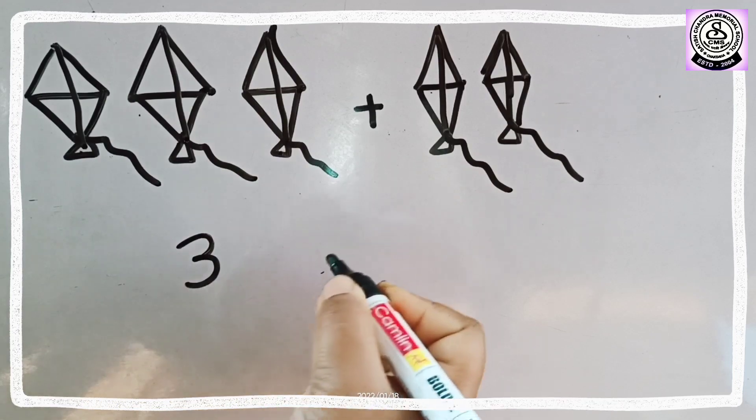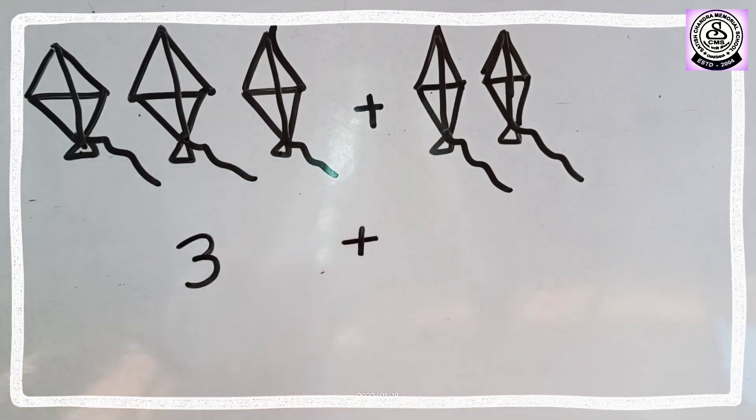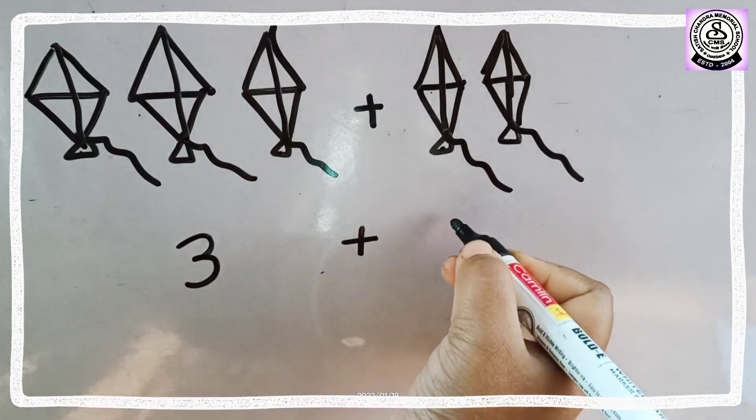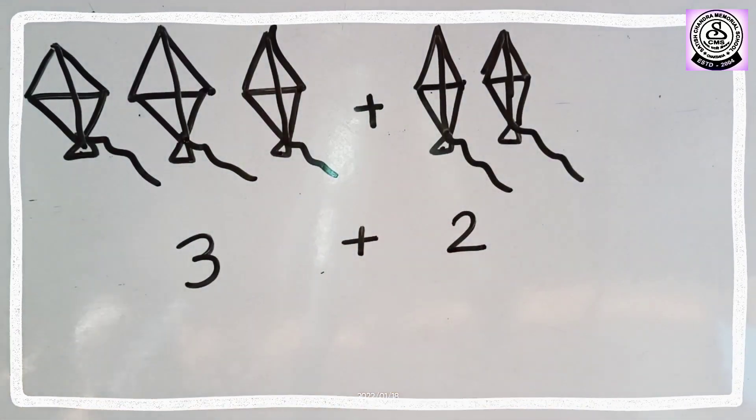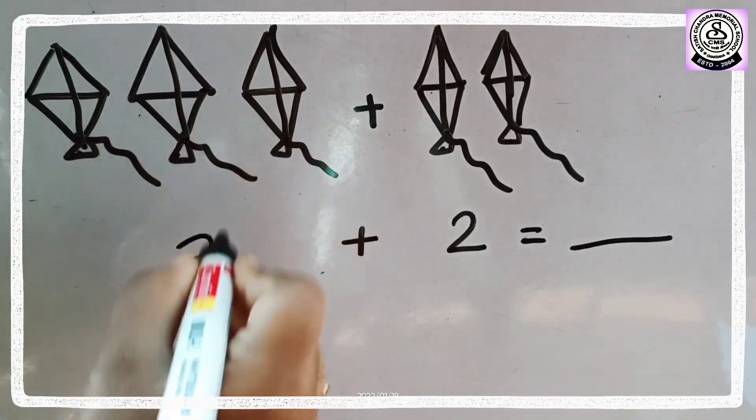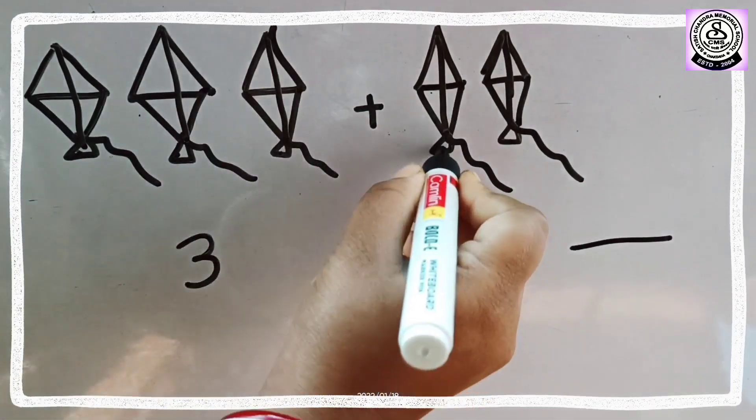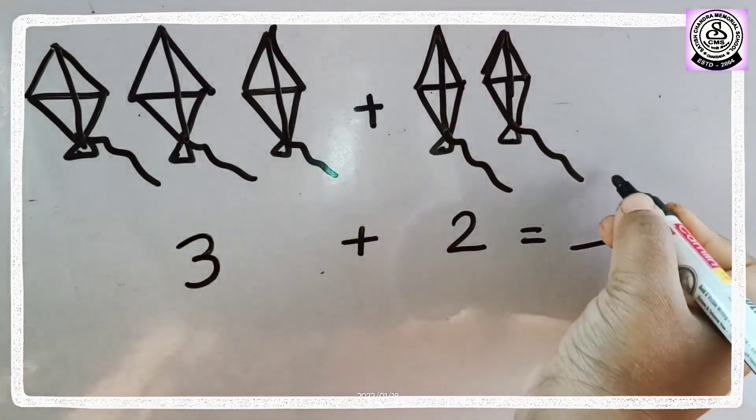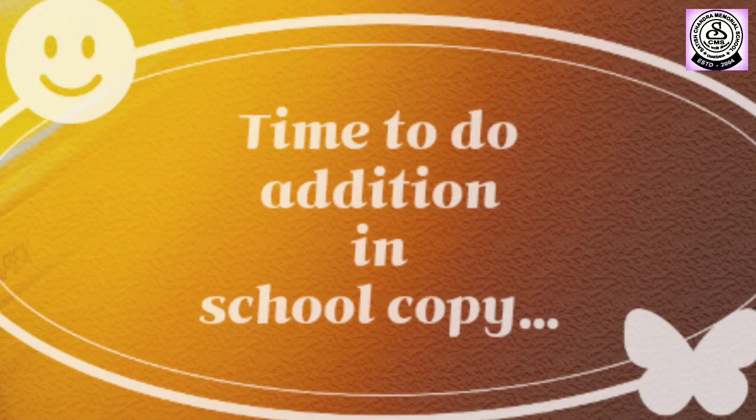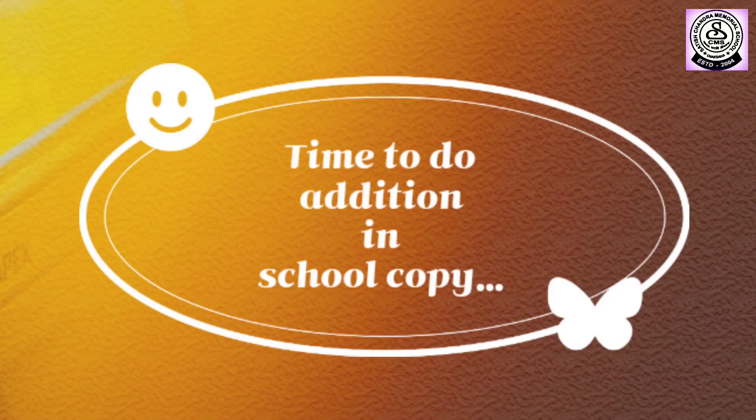So now let's see how many kites are flying in the sky. 1, 2, 3. So initially I saw 3 kites. And then later on I found 1, 2. 2 kites flying. So total how many kites? Here we have 3, 4, 5. So we have total 5 kites flying in the sky. So let's do addition in our school copy.